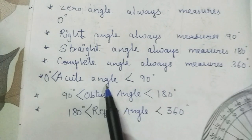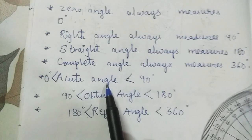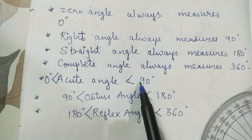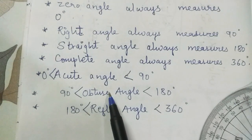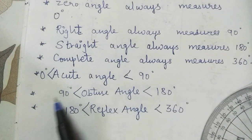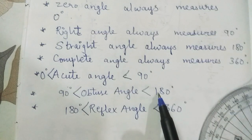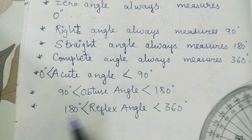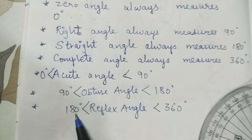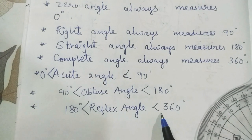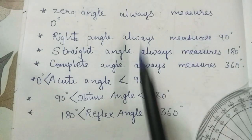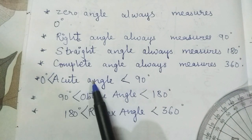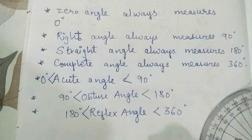Also, acute angle is greater than 0 degree and less than 90 degree. Obtuse angle is always greater than 90 degree and less than 180 degree. Reflex angle is always greater than 180 degree and less than 360 degree. So first write this part in your notebook and then proceed with Practice Set 2.